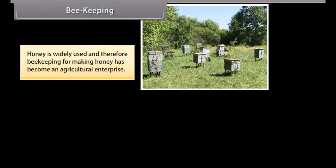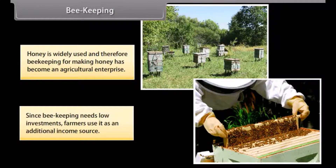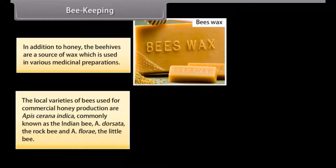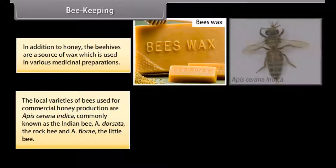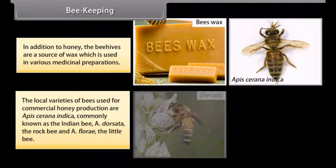Honey is widely used and therefore beekeeping for making honey has become an important agricultural enterprise. Since beekeeping needs low investment, farmers use it as an additional income source. In addition to honey, beehives are a source of wax used in various medicinal preparations. The local varieties of bees used for commercial honey production are Apis cerana indica, commonly known as the Indian bee, and A. dorsata, the rock bee.